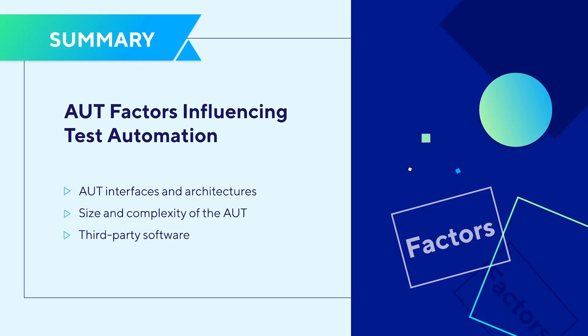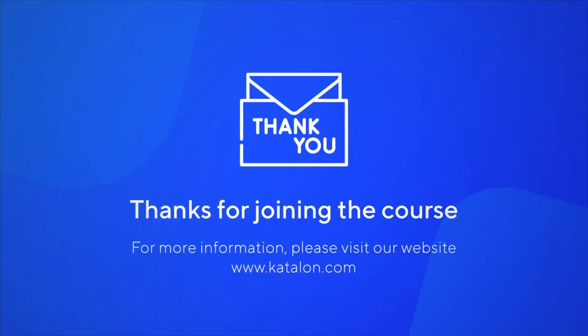Choosing the wrong test automation solution might make the job even more difficult, which defeats the purpose of using test automation in the first place. In different contexts, you really need to consider all key characteristics of the application under test, as well as the maturity of your team, to pick the most suitable solution.